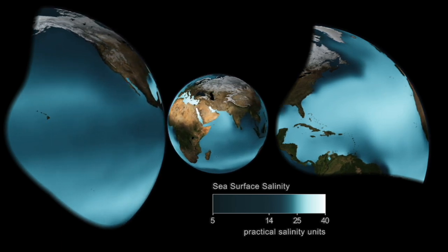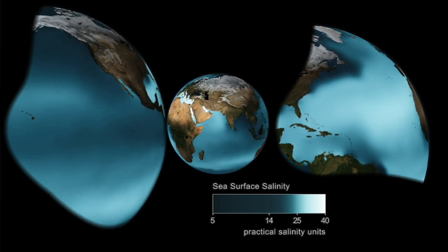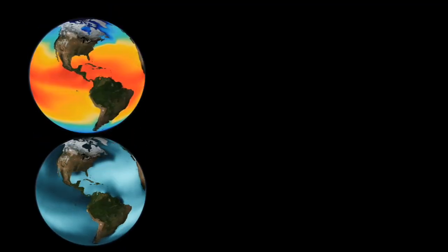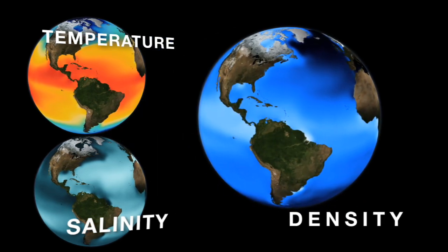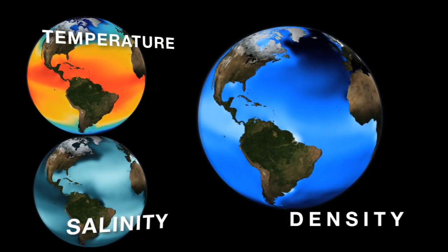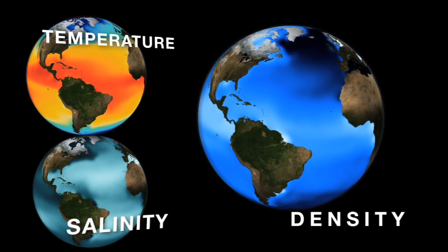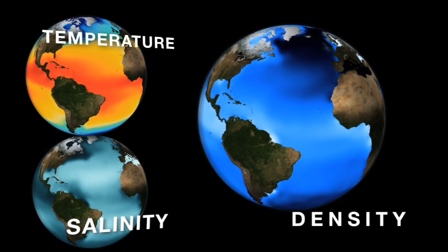The salt in the ocean affects its density, just like the temperature affects its density. And the density — meaning the amount of mass per volume — is going to then impact where the water goes as it circulates throughout the globe.